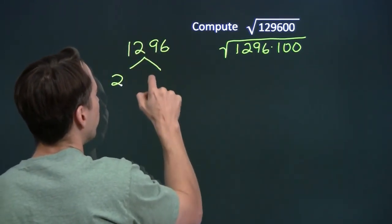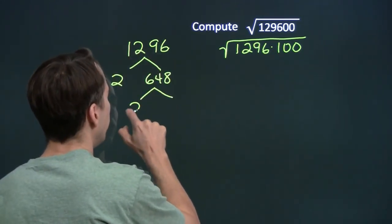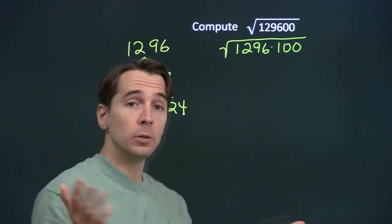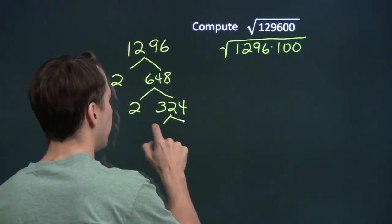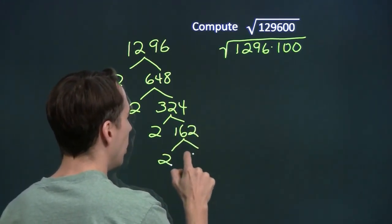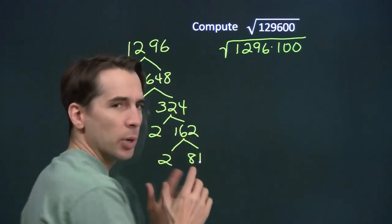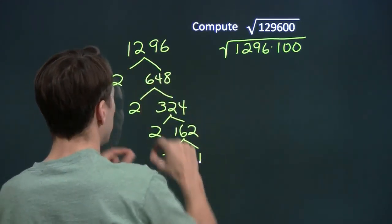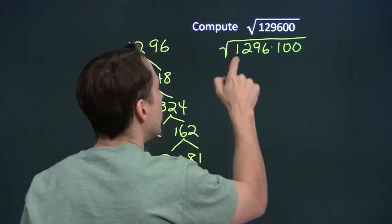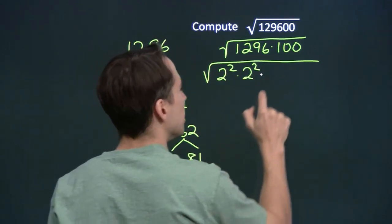Obviously 1296 is even, so we can take out a 2: that's 2 times 648. We can take out another 2: 2 times 324. Now maybe you recognize 324 is 18 squared, but if you don't, we can keep going. This is 2 times 162, and 162 is 2 times 81. We definitely recognize 81 — that's 9 squared. So we can pair up the prime factors: this 2 and 2 go together, that's 2 squared; another 2 and 2 give us 2 squared; and 81 is 9 squared. So 1296 equals 2 squared times 2 squared times 9 squared.